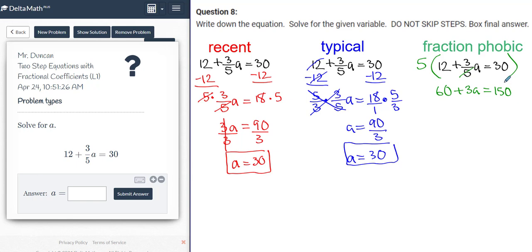Again, the numbers are a lot bigger, but you don't have fractions. So we'll subtract 60 on both sides, much the same way as we subtracted 12 on both sides over here. So subtract 60. Again, those cancel. And I have 3a is equal to 150 subtract 60, which is 90. And notice we're kind of ending up with the same thing. Then divide by 3, divide by 3. A is equal to 30.